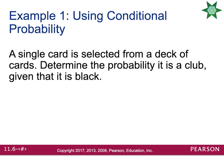For example, let's say a single card is selected from a deck of cards. Let's determine the probability it is a club given that it is black. So we're looking for the probability that we draw a club given that on the first draw we already picked a black card.